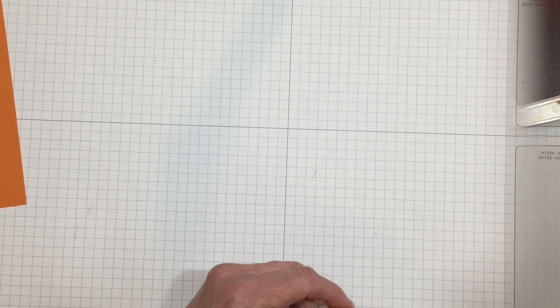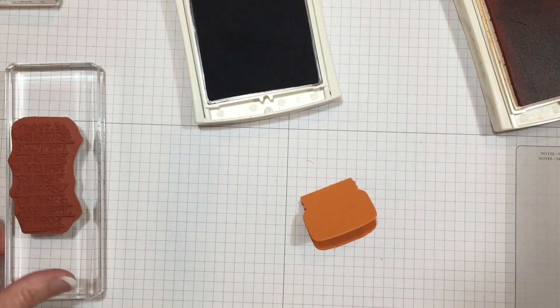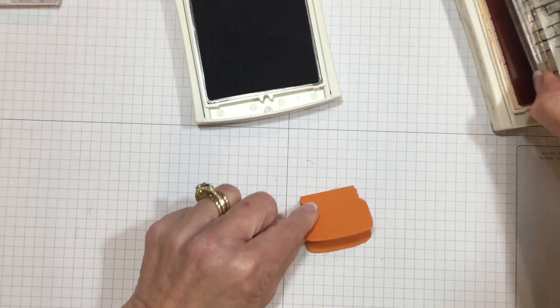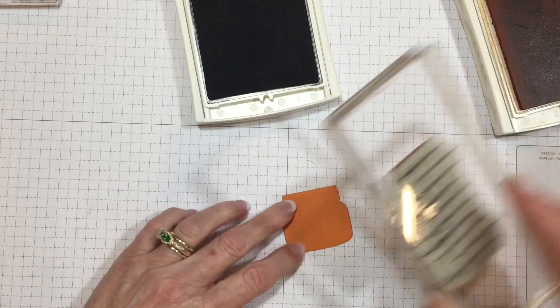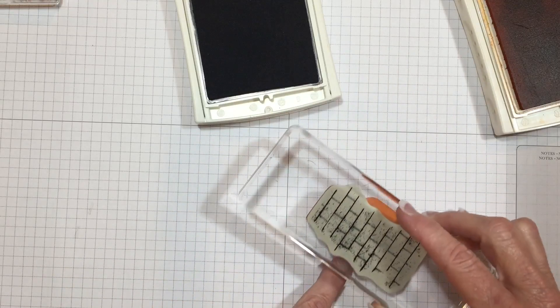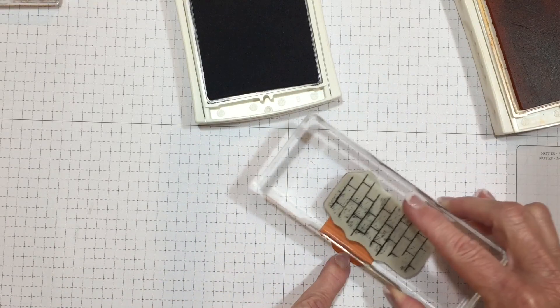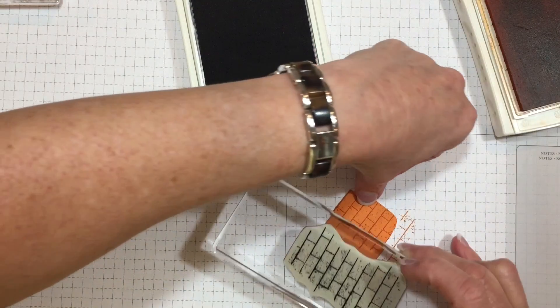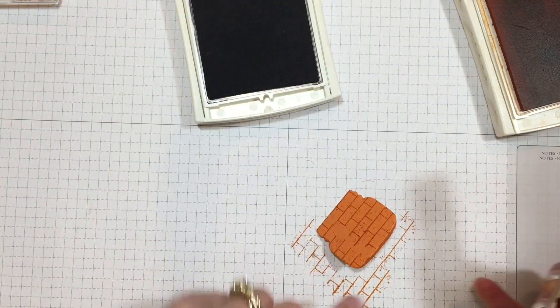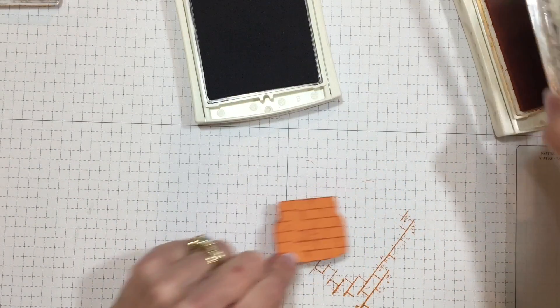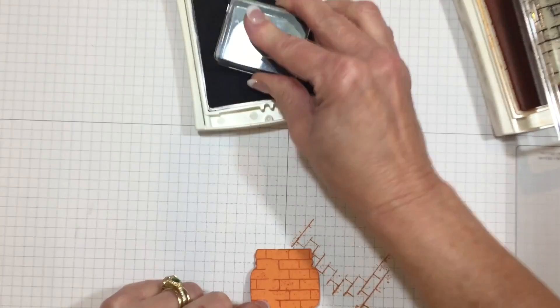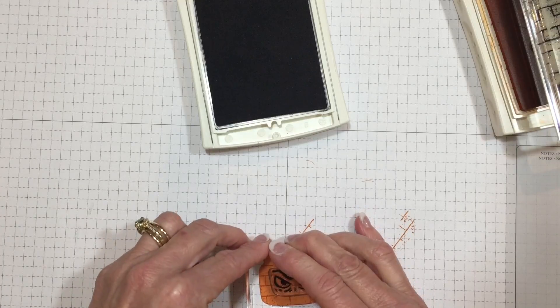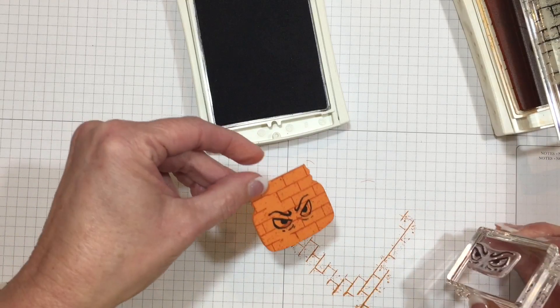I thought I would stamp the tags really quick so you can see how cute they are. For our smallest jar, we're going to use the brick from Ghoulish Grunge. I'm going to ink that up in Pumpkin Pie and stamp on here. That's for the smallest jar, and now we're going to use some eyes here which really remind me of the Grinch.